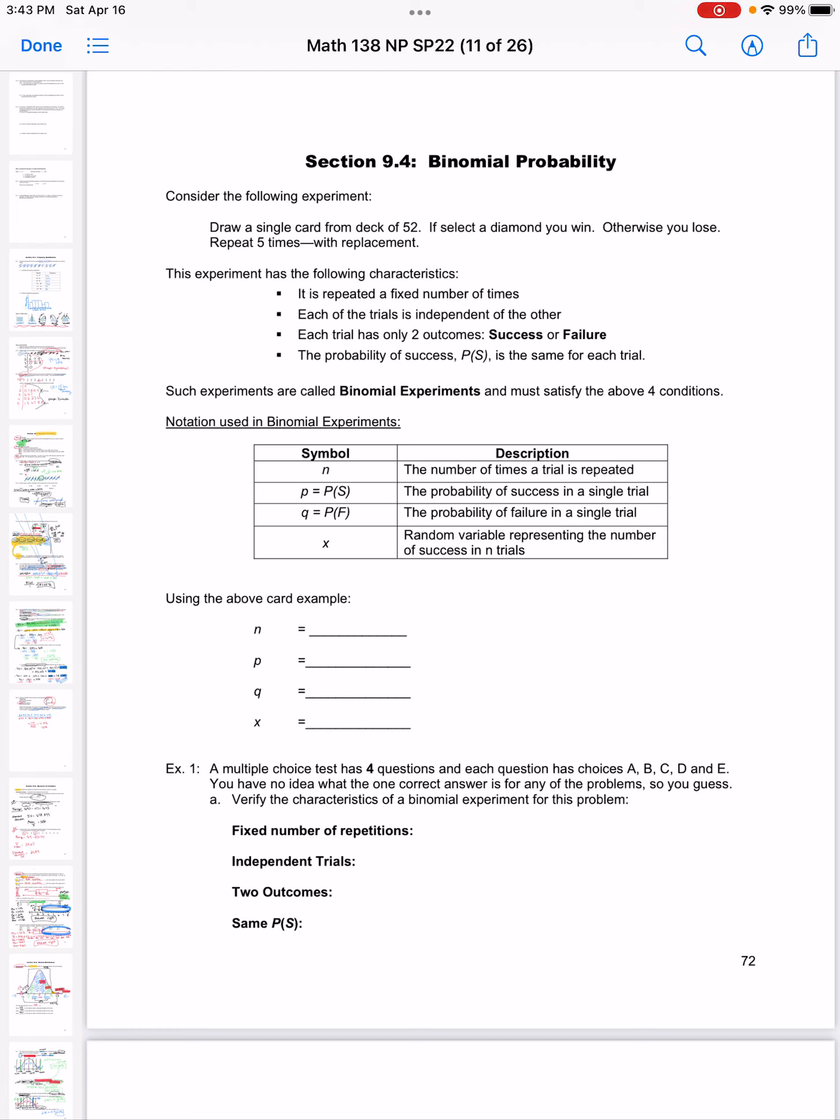In this section, we're going to take a look at a very special type of probability called binomial probability.